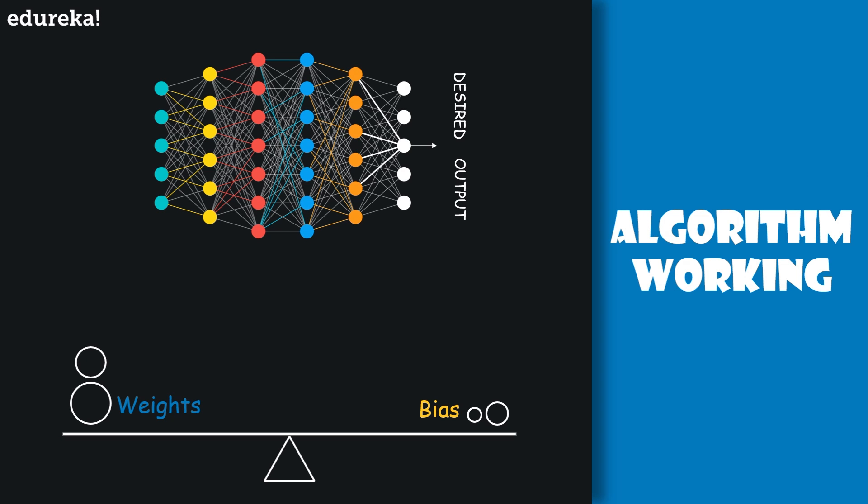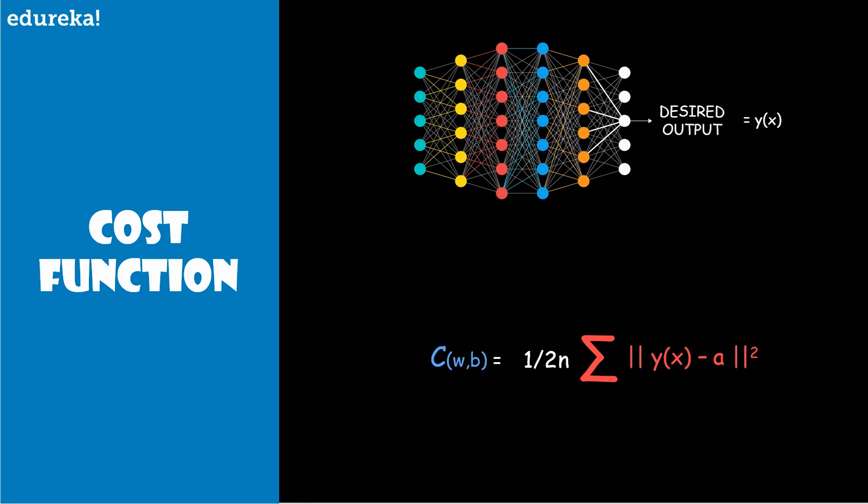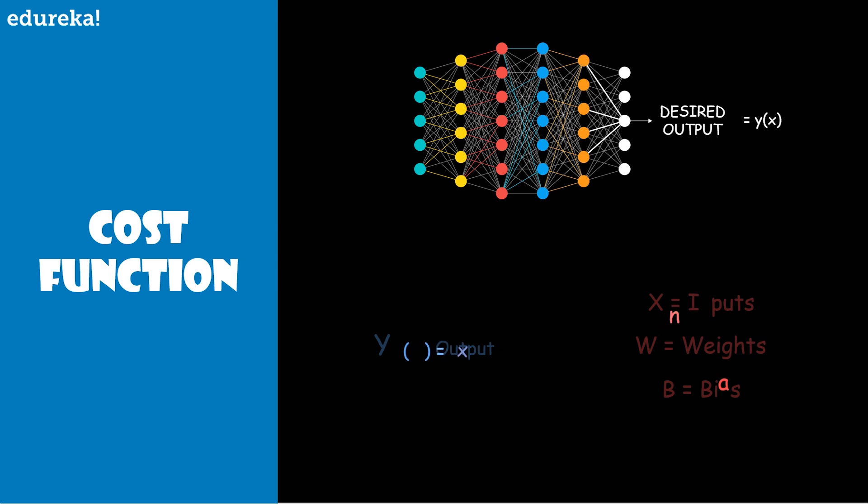To quantify how we'll be achieving this goal, we define here a cost function, which is sometimes referred to as a loss or an objective function. Here the W denotes the collection of all the weights in the network, B denotes all the biases, n is the total number of training inputs. For us it is 60K. And A is the vector of outputs from the network when X is the input. The sum is over all the training inputs.